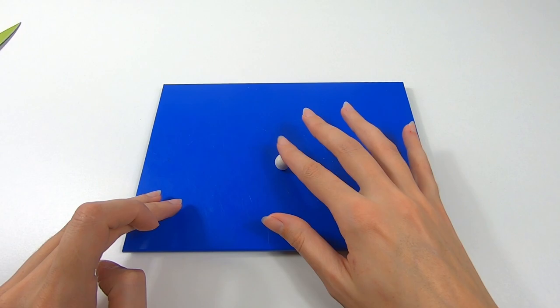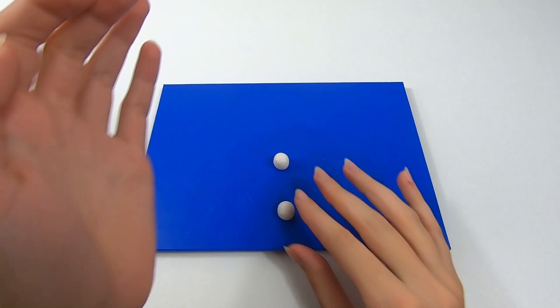So to make Olaf's feet, roll up two small pieces of white modelling paste into a cylinder shape and squash these down a little.